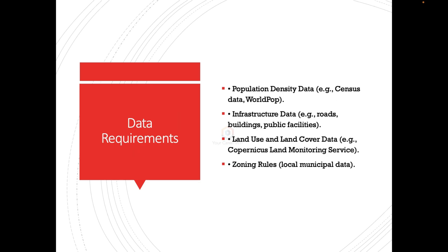What kind of data is required for this project? To get started you need several layers of data. The first is population density — to determine areas with high residential density, you can download census data or use GIS portals like WorldPop. The second is infrastructure: roads, buildings, and public facilities like hospitals and schools. You can download this from OpenStreetMap or your local government GIS department. Links will be shared in the description.